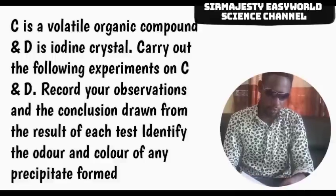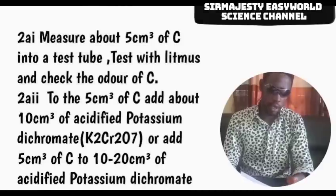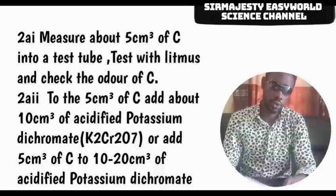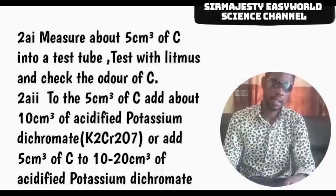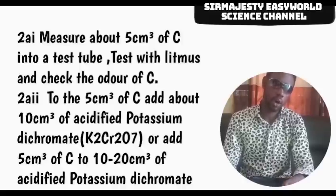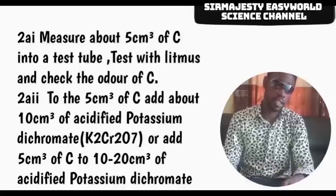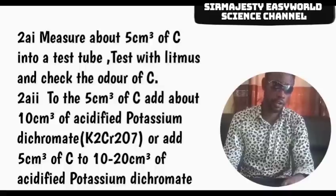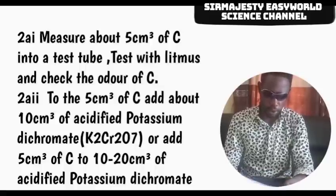For 2AI, measure about 5 ml of C and put it in a test tube. Test with litmus and notice the odor of C. Then to the 5 ml of C, add about 10 ml of acidified potassium heptaoxo dichromate(VI), that is K2Cr2O7 — potassium dichromate. That completes 2AI.